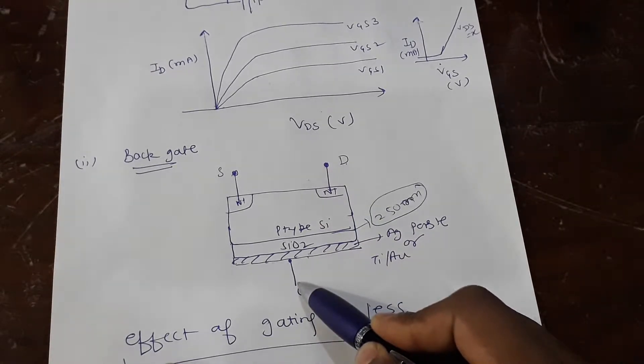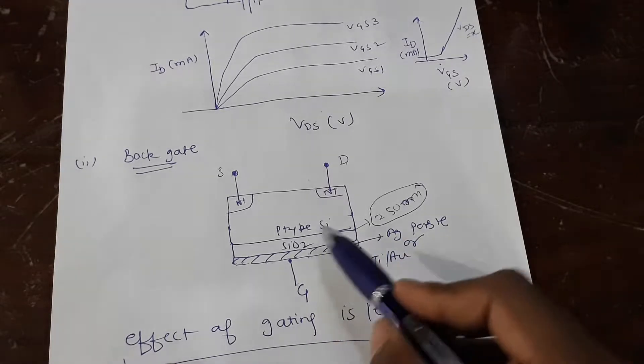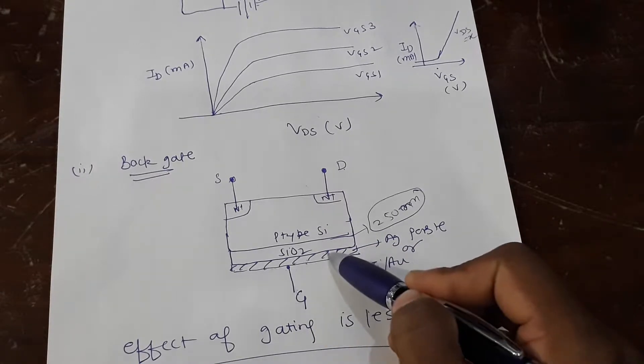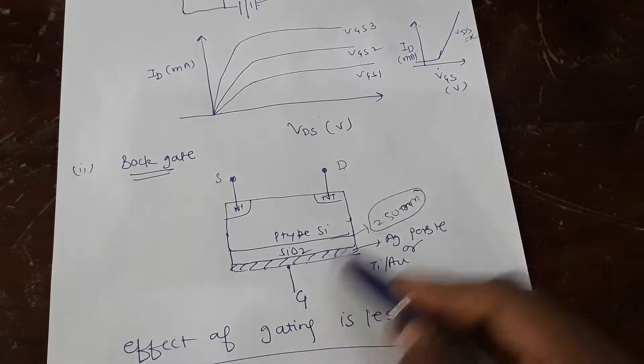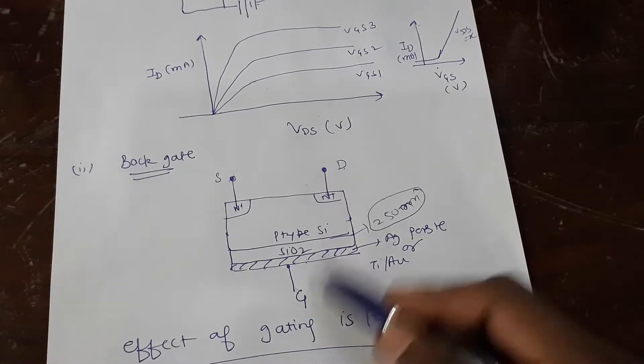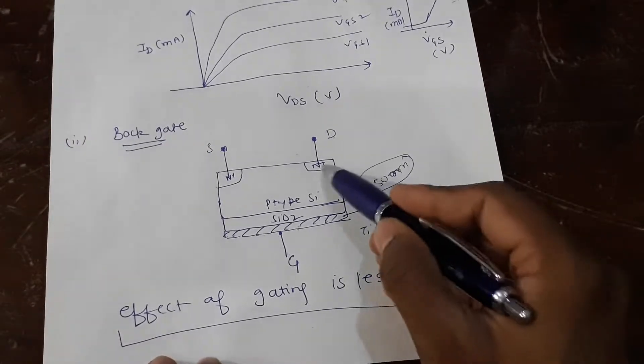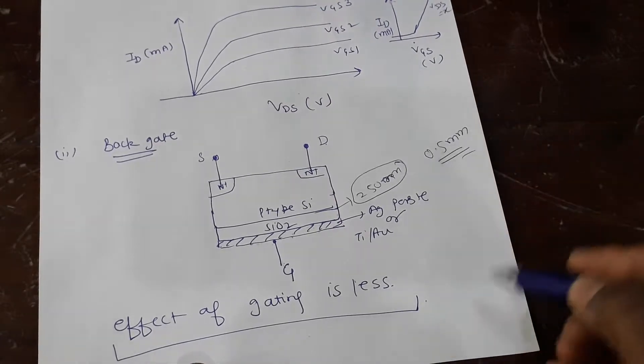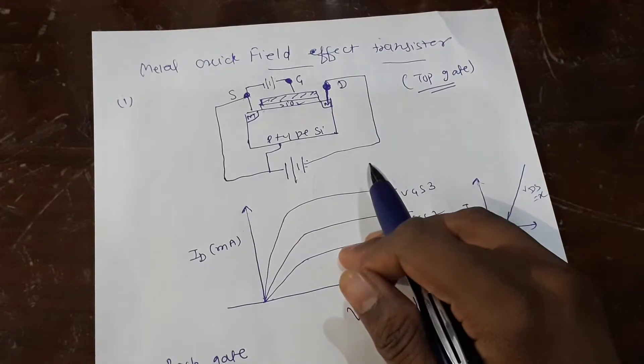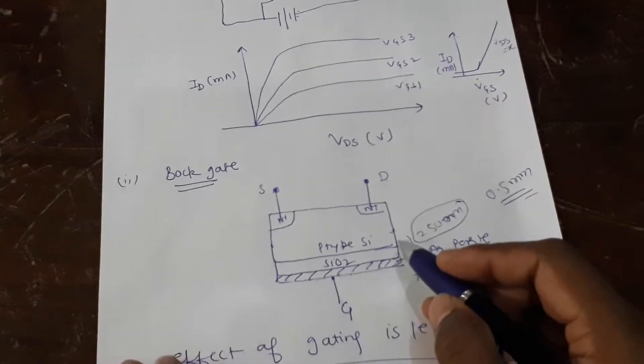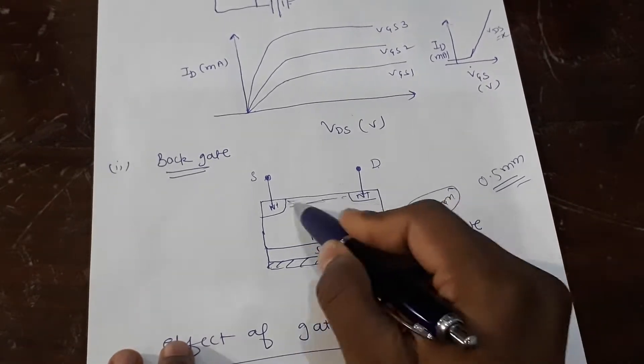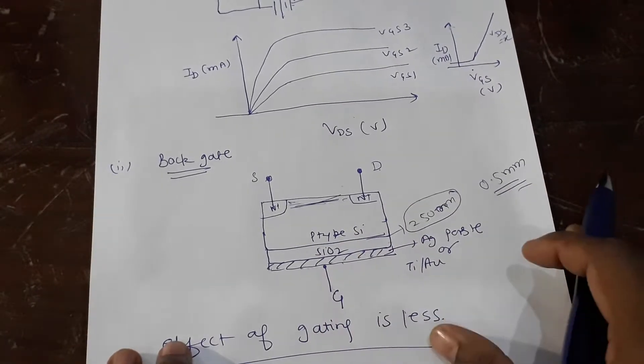Now, what is the point? The point is you don't need to do an extra layer of lithography; it's already there, so you can just tune it. Now, what is the disadvantage? The disadvantage is, since it is very thick—normally 0.5 mm—the effect of the gating is less compared to the top gate which is just sitting over the top of the material, because the charge carriers reside over here. So the effect of gating is less, but very simple to make.